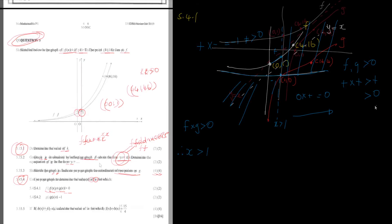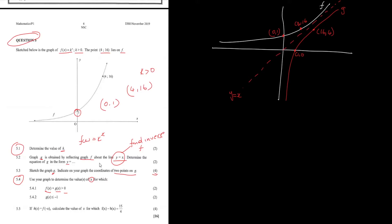Question 5.4.2 determines the values of x for which g(x) ≤ −1. This only involves g(x), so there is no need to consider f(x). On the graph, mark the line y = −1. You want the x-values for which the graph of g lies at or below y = −1, so you identify that region on the graph.